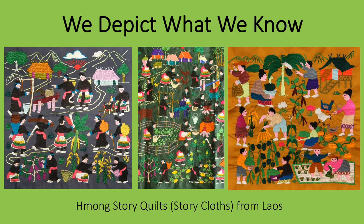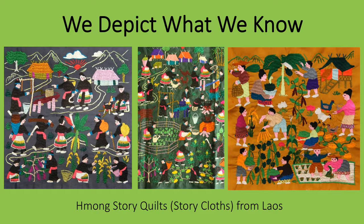In art, we often depict what we know. These Hmong story quilts, or story cloths, made in Laos are filled with plants, gardening, and harvesting vegetables and grains because their makers live in a largely agrarian society. The images are embroidered with thread onto the fabric background. Usually they only have two layers, the embroidered top and a backing fabric, so they are often called cloths rather than quilts because technically a quilt has three layers: a top, a filler or batting, and a backing, though there are exceptions like the crazy quilts.